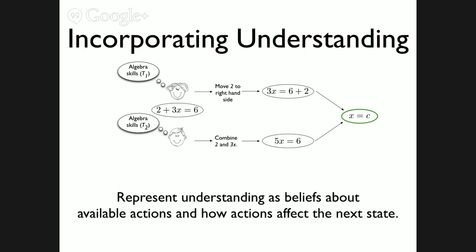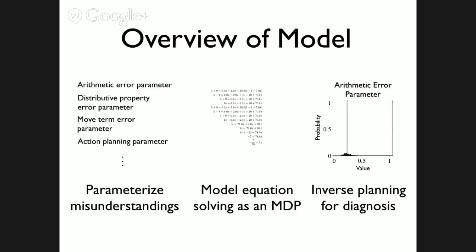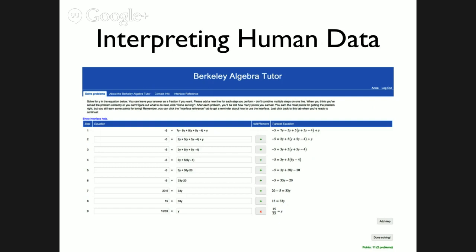To step back: in Bayesian inverse planning, we start by defining the space of misunderstandings as a sequence of parameters, model the educational activity as an MDP, and get back posterior distributions as the diagnosis. We generally get a posterior distribution over the whole space of possible understandings. For one participant, the model shows a relatively high probability of making arithmetic errors — about 25% of operations. We've applied this model in several contexts: in the lab, its inferences are consistent with human observers; applied to a microbiology game played by middle schoolers, diagnoses were predictive of scores on a more conventional assessment.